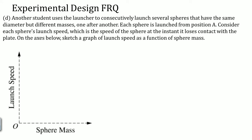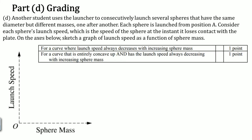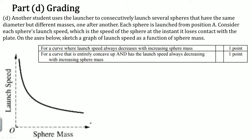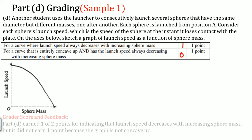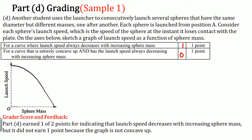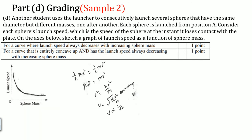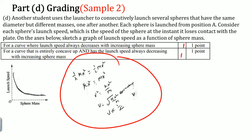The last part of the question involves a graph worth two points. You earn the first point for showing that launch speed decreases with increasing sphere mass, and the second point requires the correct concavity — the curve must be concave upward showing decreasing launch speed. Sample one gets the first point but not the second because it did not show the correct concavity.